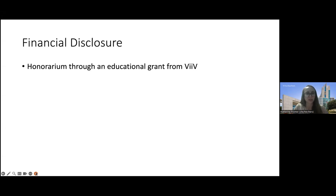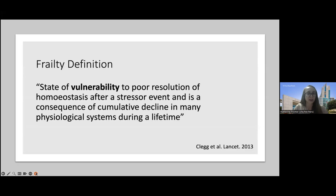My only disclosure is I recently received an honorarium through an educational grant from VEVE. To start defining frailty, here is a quote I like: it's a state of vulnerability to poor resolution of homeostasis after a stressor event and is a consequence of cumulative decline in many physiologic systems during a lifetime. I highlighted the word 'vulnerability' to touch upon that it's a potential to lead to adverse events, and that it's not a static state — it can change over time.